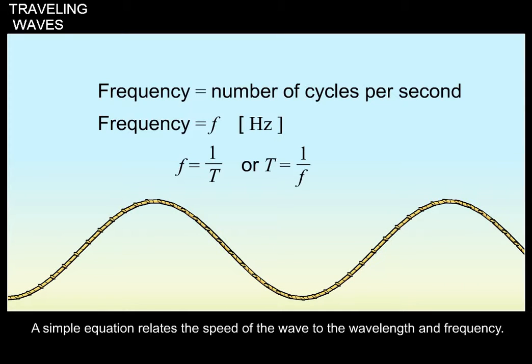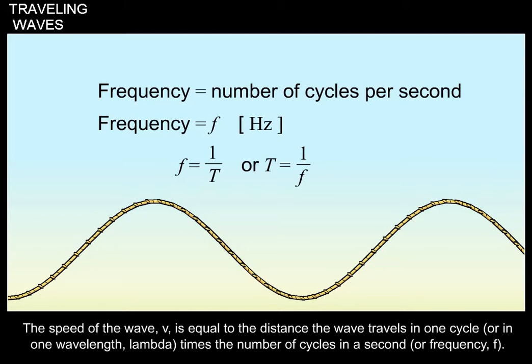A simple equation relates the speed of the wave to the wavelength and frequency. The speed of the wave, v, is equal to the distance the wave travels in one cycle, or one wavelength lambda, times the number of cycles in a second, or frequency f.